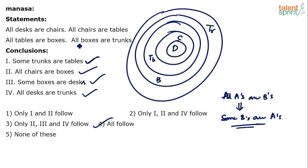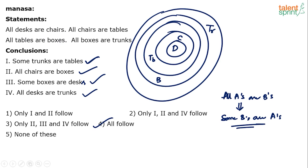Similarly, some boxes are desks. We know that all desks are chairs, all chairs are tables, all tables are boxes, all boxes are trunks. So basically, all desks are boxes. All desks are chairs, all chairs are tables — so chairs can be replaced with tables. All desks are tables; all tables are boxes means all desks are boxes. If all desks are boxes, then some boxes are desks.